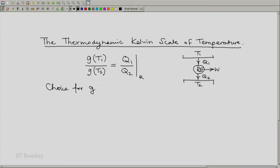Now what is the choice for G? Let us make the simplest of choices. G of T is T itself.